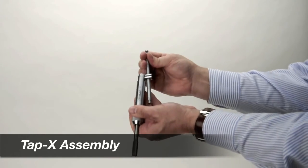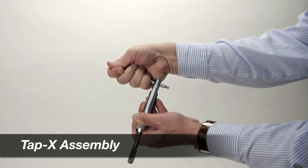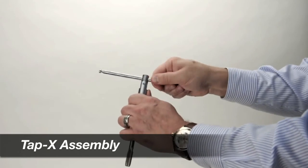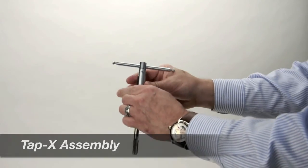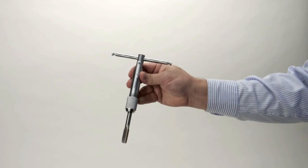Pull out the t-bar handle, slide it up, and then turn the t-bar handle until it is perpendicular to the wrench body. Slide the handle halfway back and the tap is now locked firmly in the TAP-X wrench and it is ready for use.